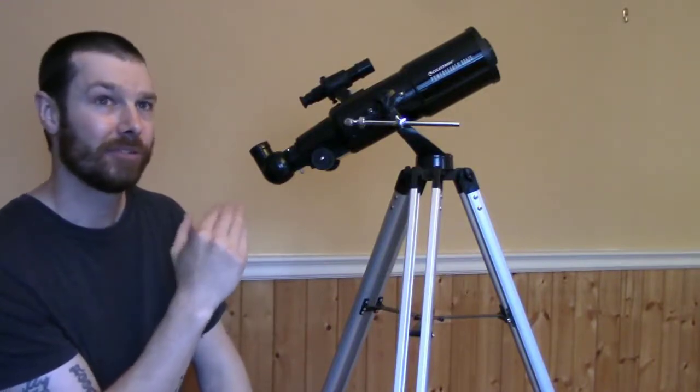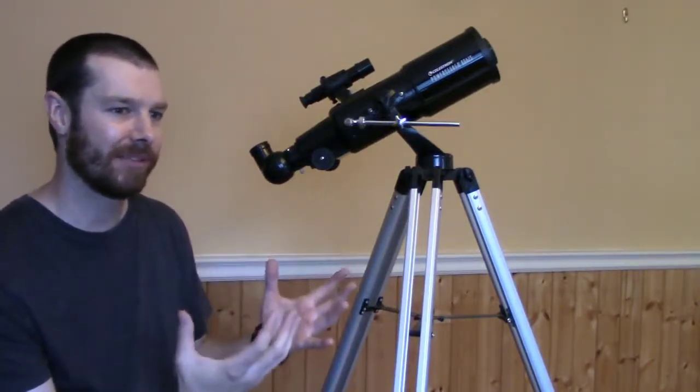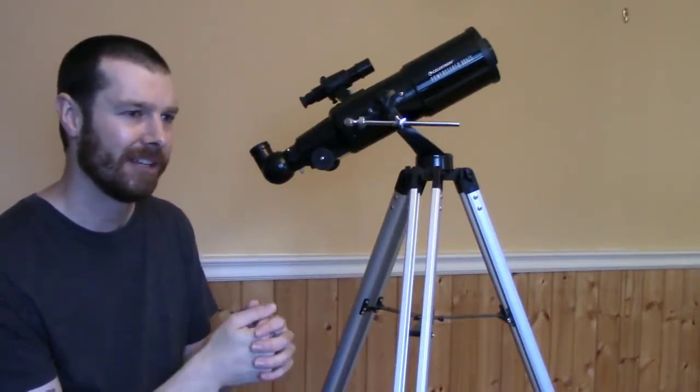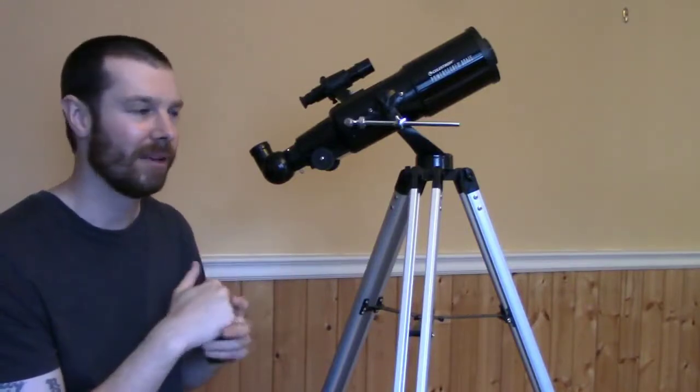Because the 4 millimeter is almost too close really. So it comes with a 20 and a 4. 20 is good, wide field of view, you get nice shots of the moon, even deep space things you can see. But with a 15 and a 9, it's kind of the sweet spot for this telescope in my opinion.